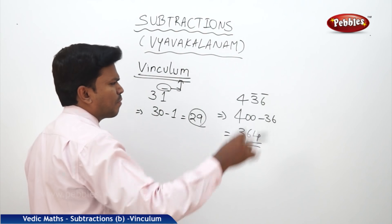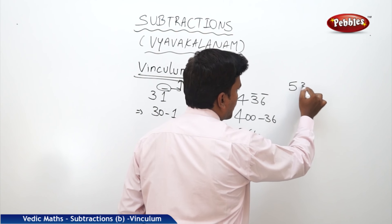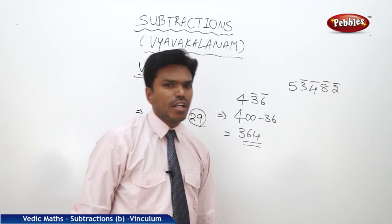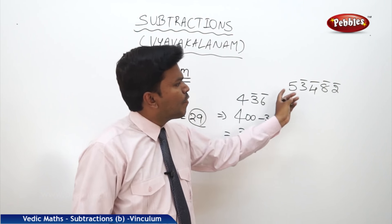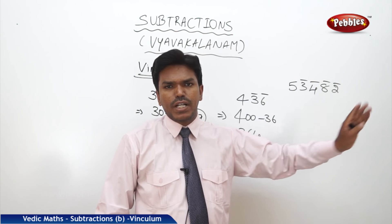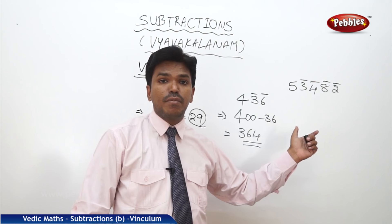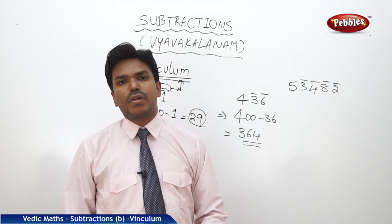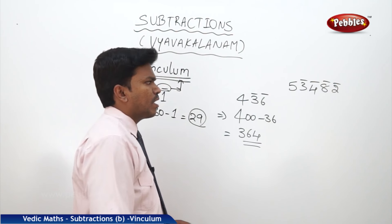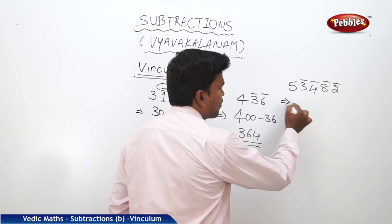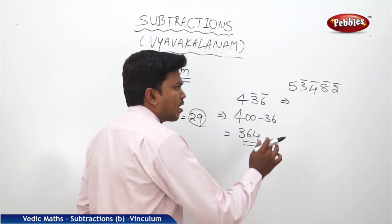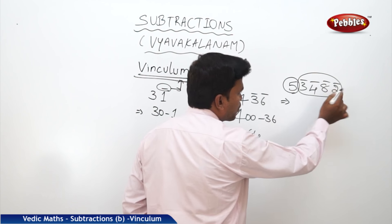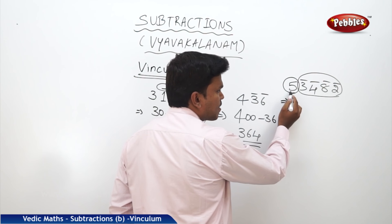Suppose I write a bigger number like this: 5, 3, 4, 5 bar, 3 bar, 4 bar, 8 bar, 2 bar. Writing this out as 50,000 minus 3,482 is a lengthy process. How can we convert this vinculum number — this negative complement number — into the normal number within a single step?